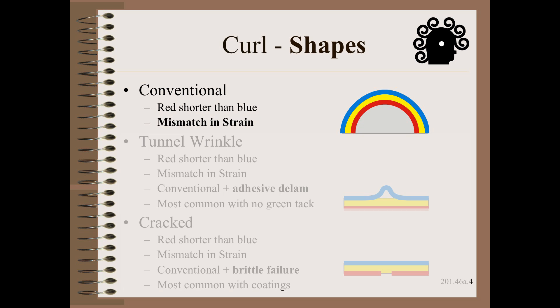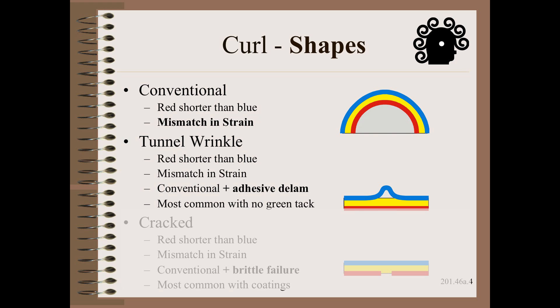However, what a lot of laminators do not understand is that their tunnel wrinkles are curl with one tiny wrinkle added — excuse the pun. That is, curl plus delamination makes a transverse wrinkle across the width. We know that these TD wrinkles are equivalent because you can, in some cases, see conventional curl morph into tunnel wrinkles with lesser curl right in front of your eyes. Specifically, these cases are with low tack adhesives when the tail is cut or unwrapped from the wound roll.